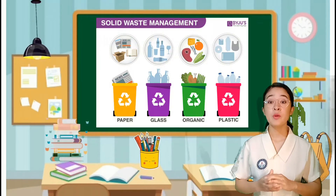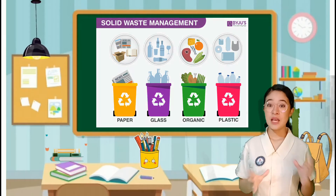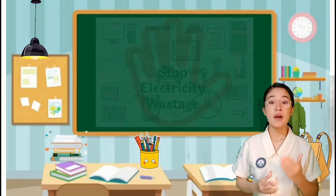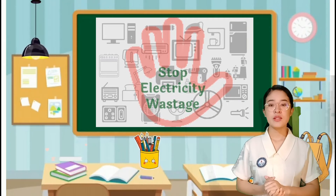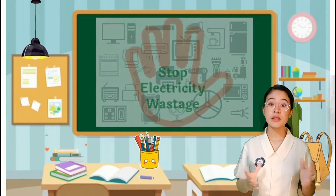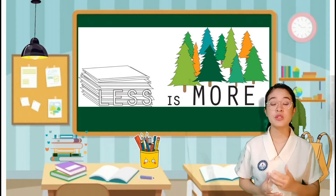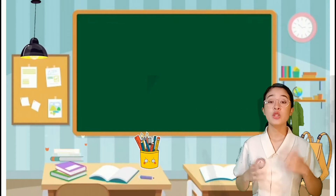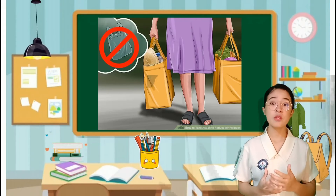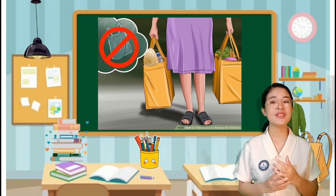Sixth, proper waste management. Seventh, avoid wasting electricity. Eighth, reduce paper usage. And lastly, avoid using disposable plastic and use earthen cups.